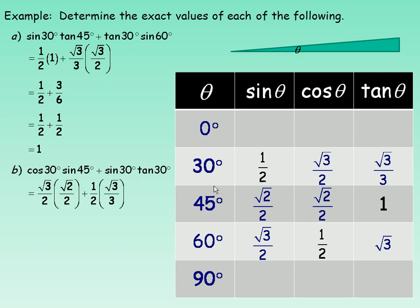In part B, the cosine of 30 degrees is root 3 over 2, so we substitute root 3 over 2 here. The sine of 45 is root 2 over 2. The sine of 30 degrees is a half, and the tan of 30 degrees is root 3 over 3. Expanding out: root 3 times root 2 is root 6, 2 times 2 is 4 in the denominator, 1 times root 3 is root 3, and 2 times 3 is 6 in the denominator.